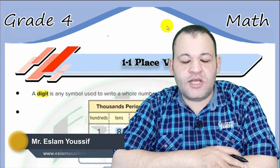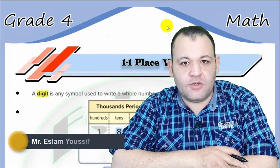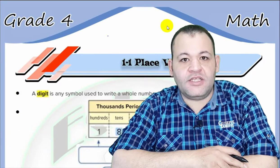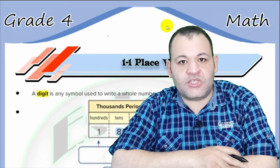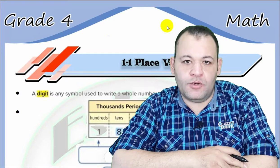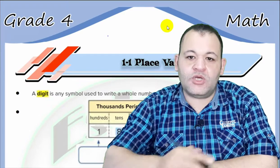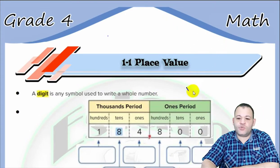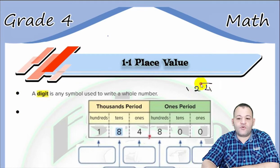The first point in our lesson today is about the digit. What is the meaning of a digit? A digit is a symbol that is used to write a whole number. For example, the number 124 is formed from three digits.